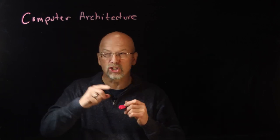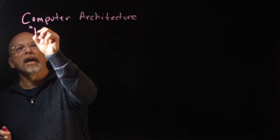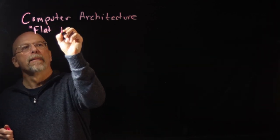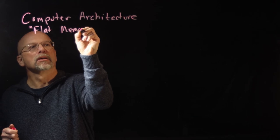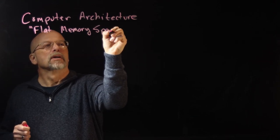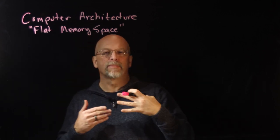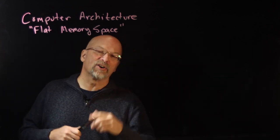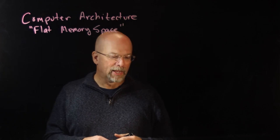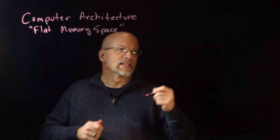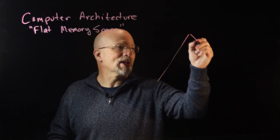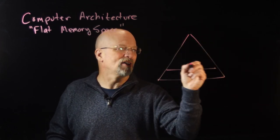One of the most important parts about computer architecture is how you communicate with memory, and we're going to start with something called a flat memory space. A flat memory space is the very simplest way for a processor to interact with memory.